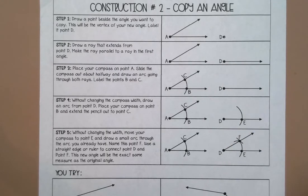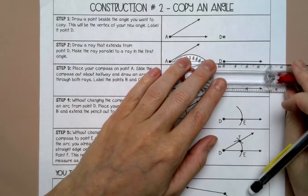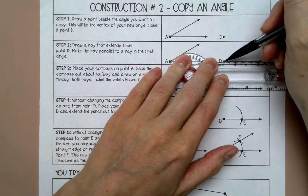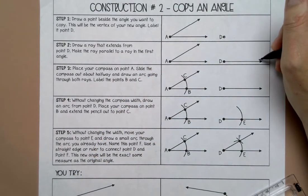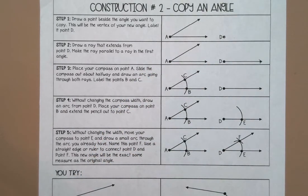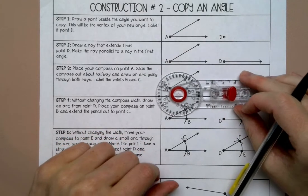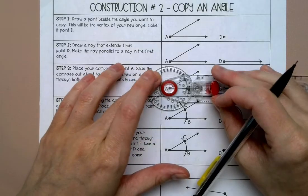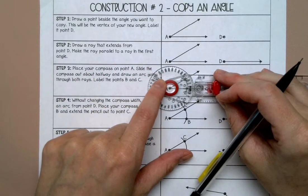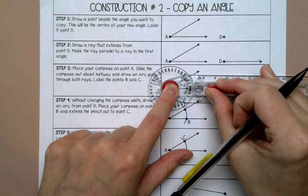Label it point D like I have it. Then we're going to draw a ray, so just take your straight edge and draw a ray out. Remember, a ray has one arrow. Then we're going to place our compass on point A and slide our compass out about halfway or a little over halfway.